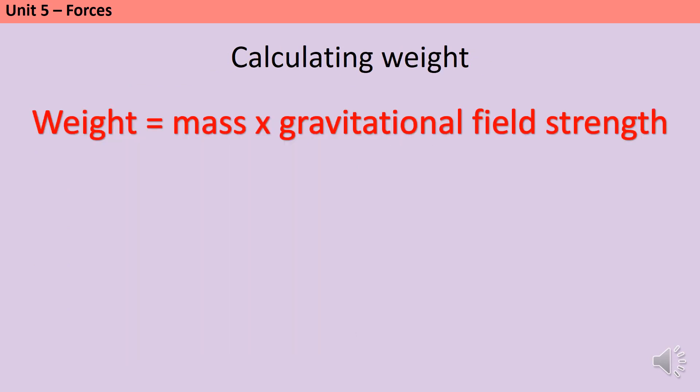Now, for some maths. We can calculate the weight of an object based on the mass of that object, and the gravitational field strength of the planet or satellite that it's stood on. Weight is measured in newtons, shown with a capital N, because it's a force, and all forces are measured in newtons. Mass is measured in kilograms. So, if you're given a mass in grams, you'll need to convert it before you complete the calculation. And gravitational field strength is in newtons per kilogram.